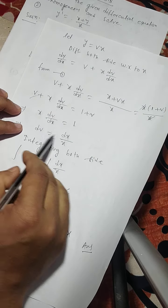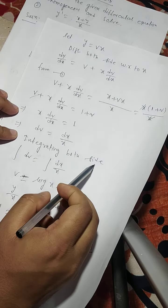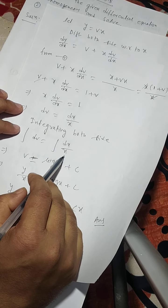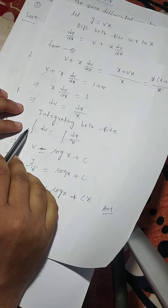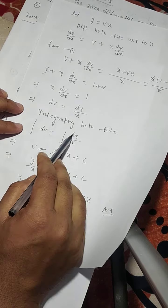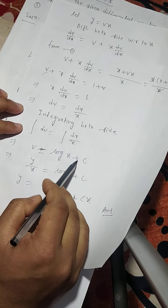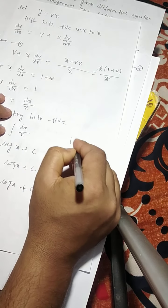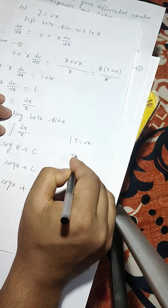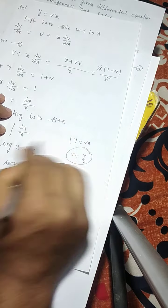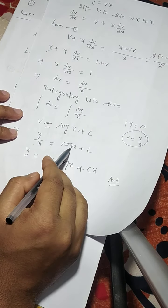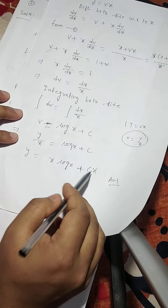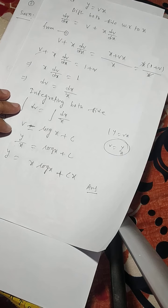So dv equals to dx/x. Integrating both sides: the integral of dv equals the integral of dx/x. Therefore v equals log x + c, where c is the integrating constant. Now since y = v·x, we have v = y/x. Substituting, y/x equals log x + c, so the solution is y equals x·log x + c·x.